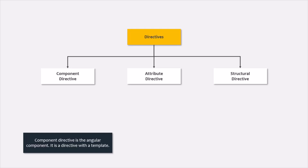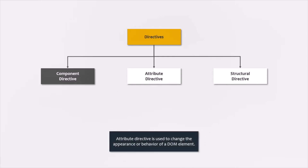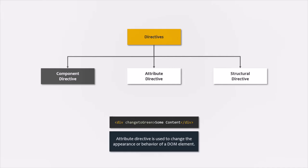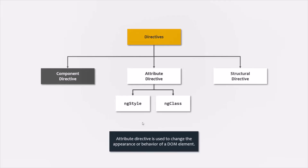Attribute directive is another type of directive. Using attribute directive, we can change the appearance or behavior of a DOM element. Unlike component directive, attribute directive does not have a template — it does not render anything on the web page, nor does it remove anything. For example, we can create a custom attribute directive called 'changeToGreen' for changing the background color of a web page element to green, and use it on all those elements whose background we want to change. Since it is an attribute directive, it only changes the behavior or look of the HTML element — it does not add or remove that element. We also have built-in attribute directives like ngStyle and ngClass, which we can use to change the appearance of a web page element. The attribute directives can also be applied conditionally, and we will learn about ngStyle and ngClass in our coming lectures.